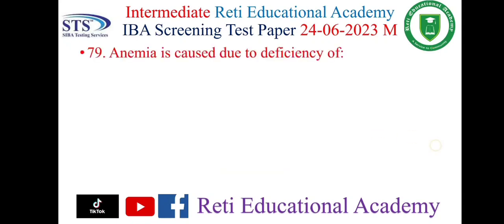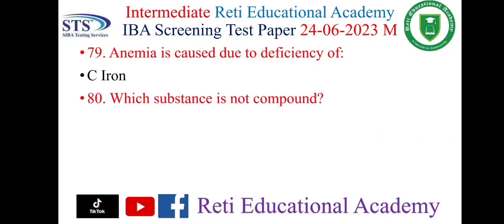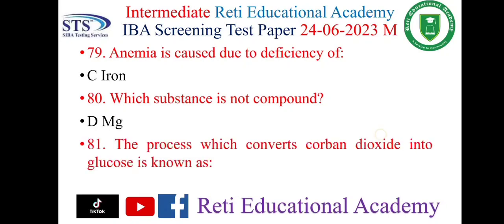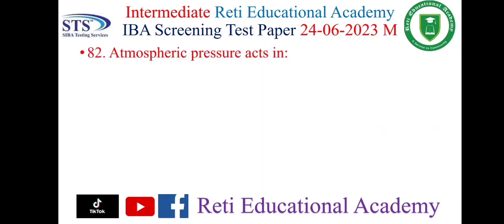Question number 79: Anemia is caused due to deficiency of — the correct answer is C: iron. Question number 80: Which substance is not a compound? The correct answer is B: Mg (magnesium). Question number 81: The process which converts carbon dioxide into glucose is known as — the correct answer is C: photosynthesis.